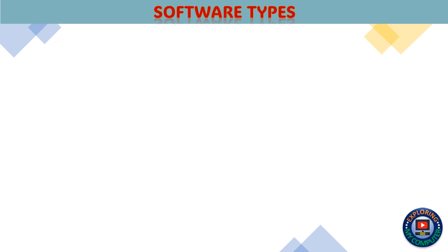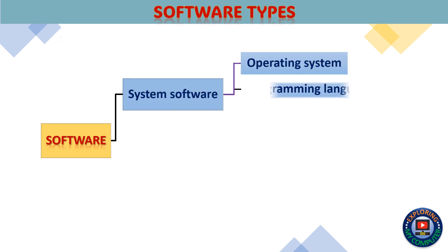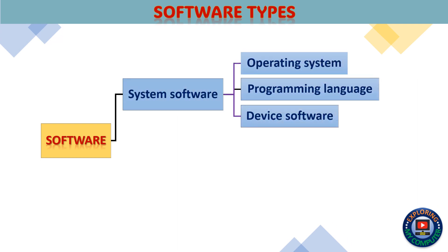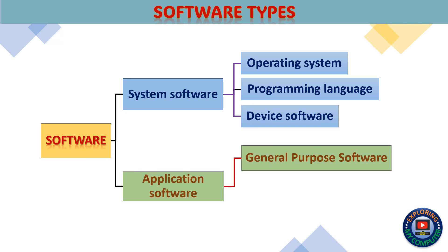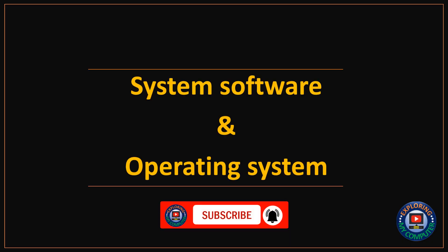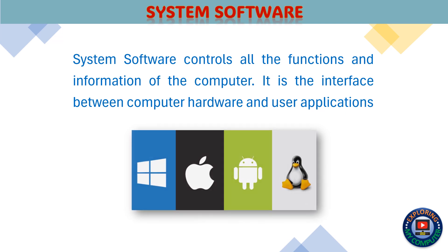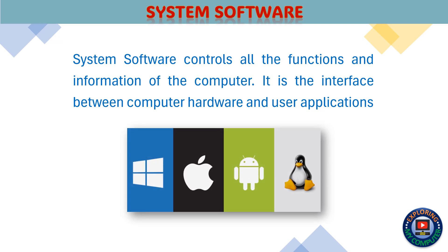This screen shows different types of software with a block diagram. System software controls all the functions and information of the computer. It is the interface between computer hardware and user applications.